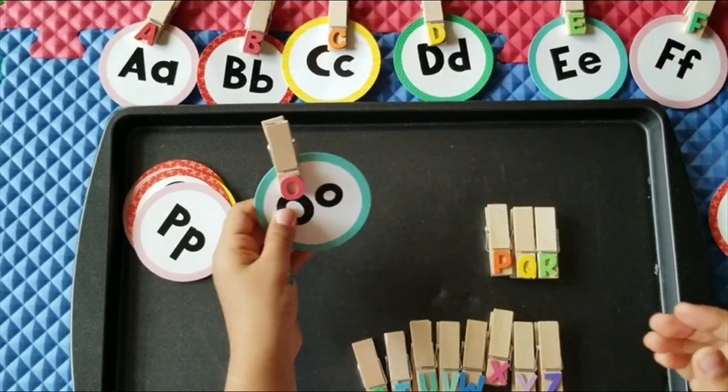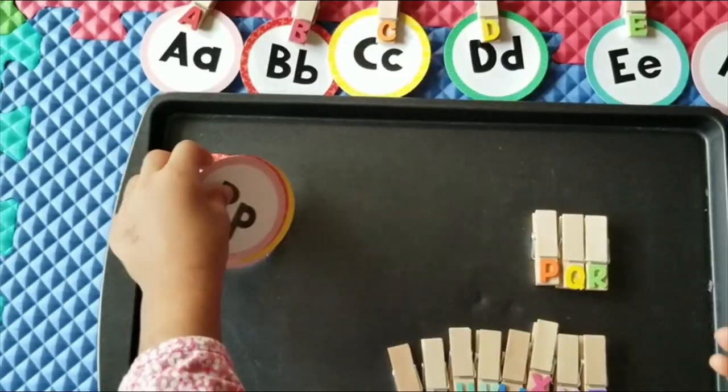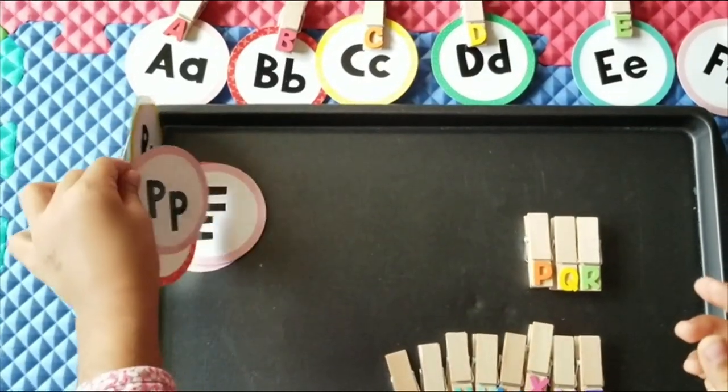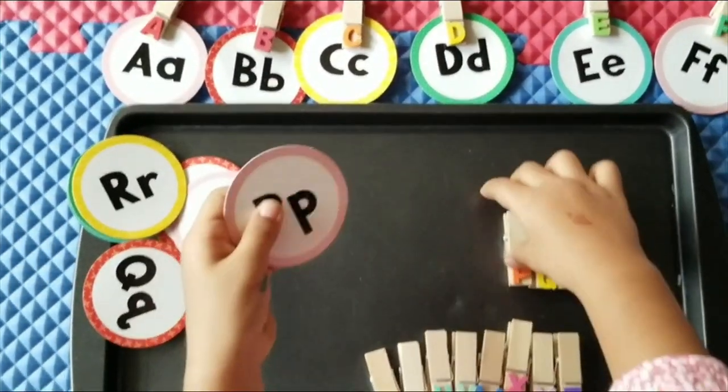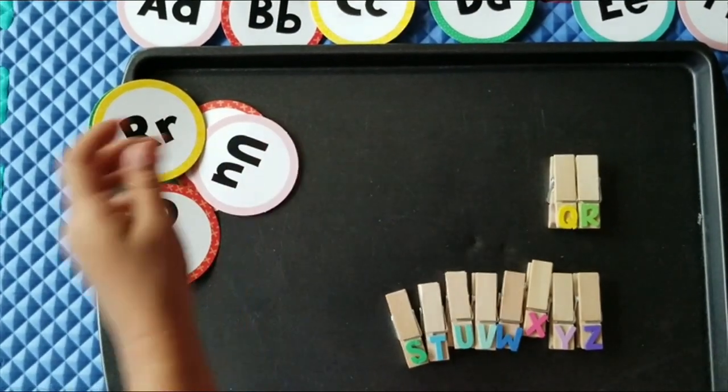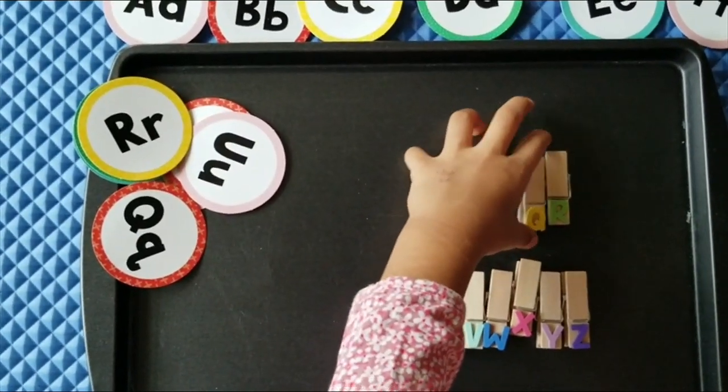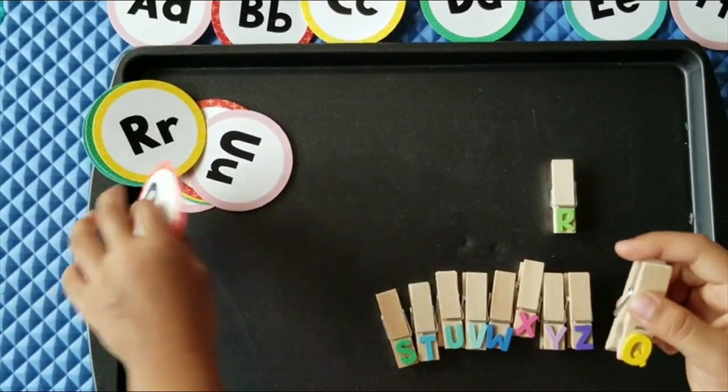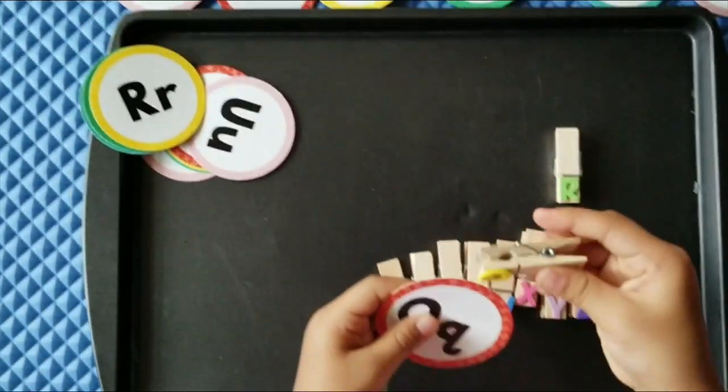This is the letter O which sounds O. Octopus. This is the letter P which sounds P. Penguin. This is the letter Q which sounds Q. Queen.